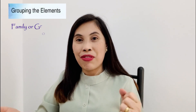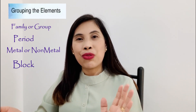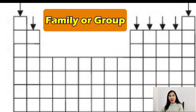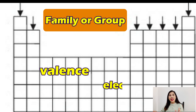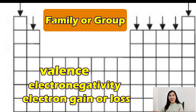Now we're down to the last one, which is the groupings of the elements in the periodic table. We have the family, the period, the metal or non-metal, and the block. The family is the vertical arrangement of elements in the periodic table. The family affects the valence of every atom — every family has the same valence electrons and the same valence, and it tells us the number of electrons gained or lost. All elements in the same family have the same number of electrons lost or gained.